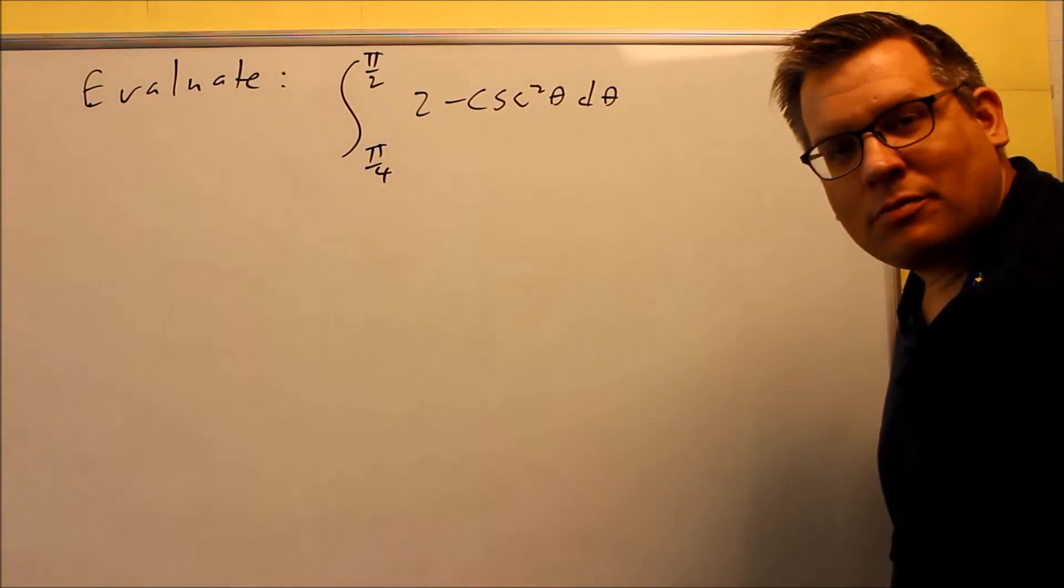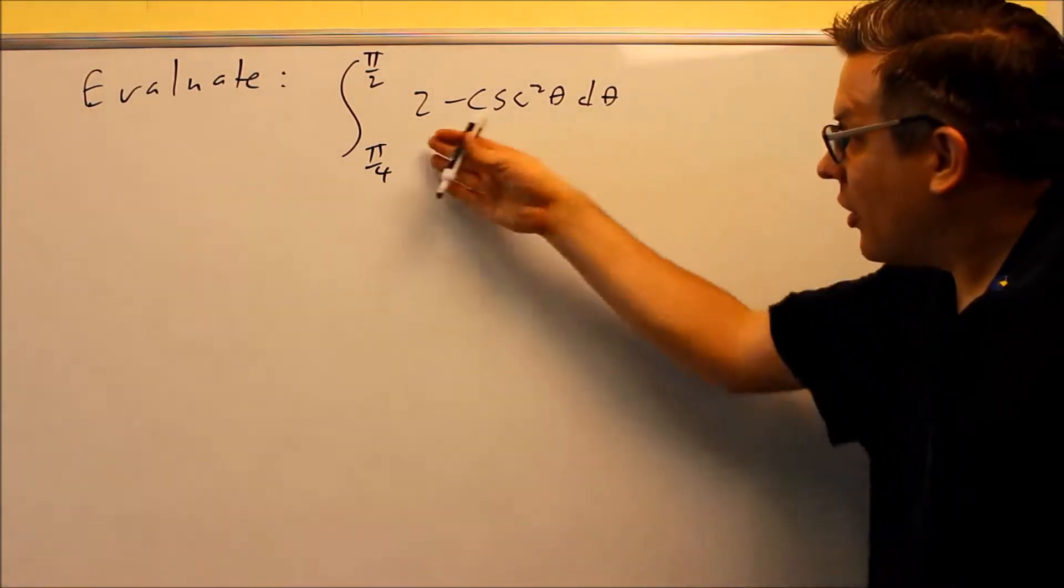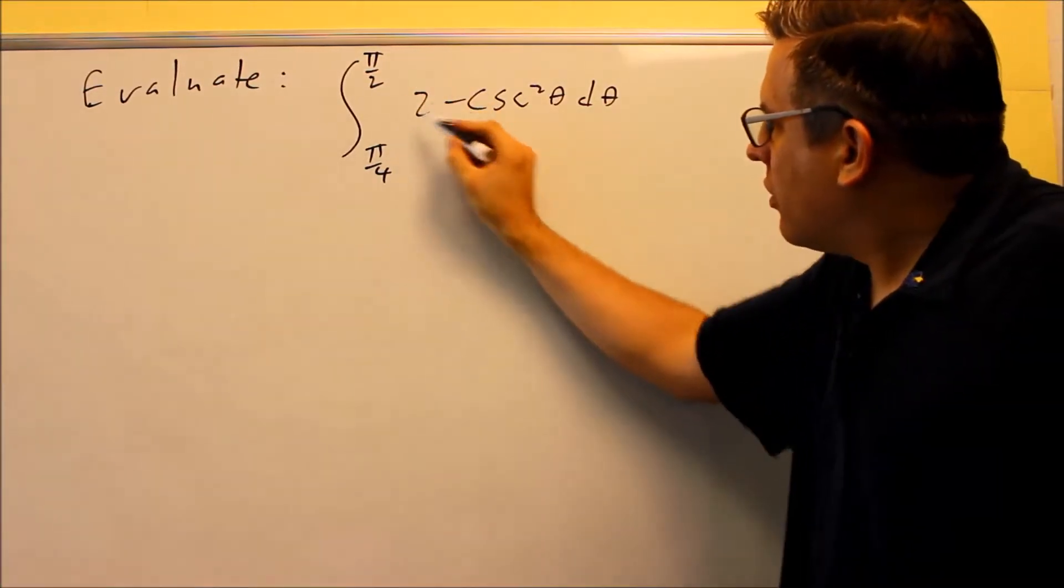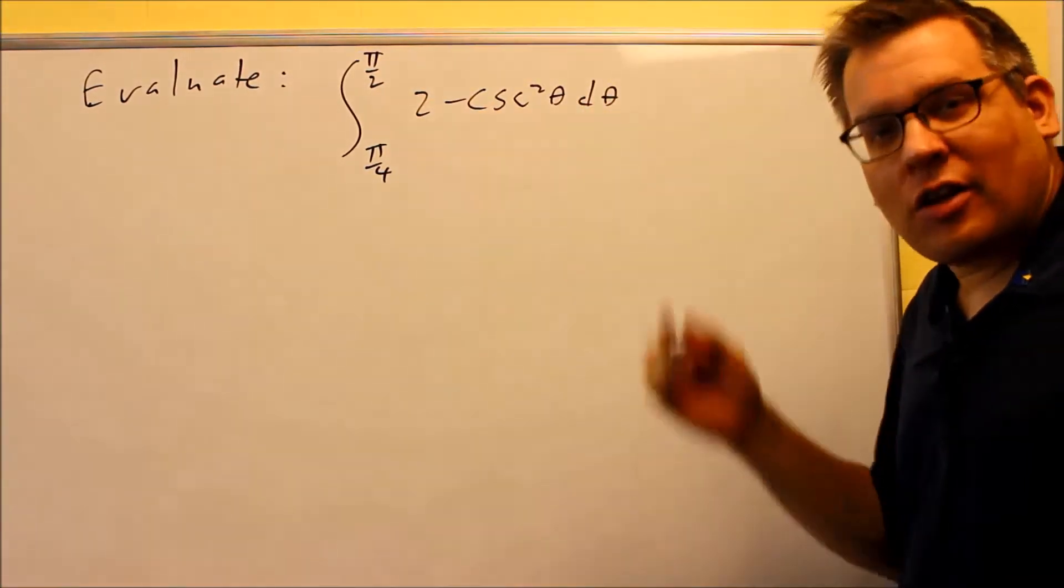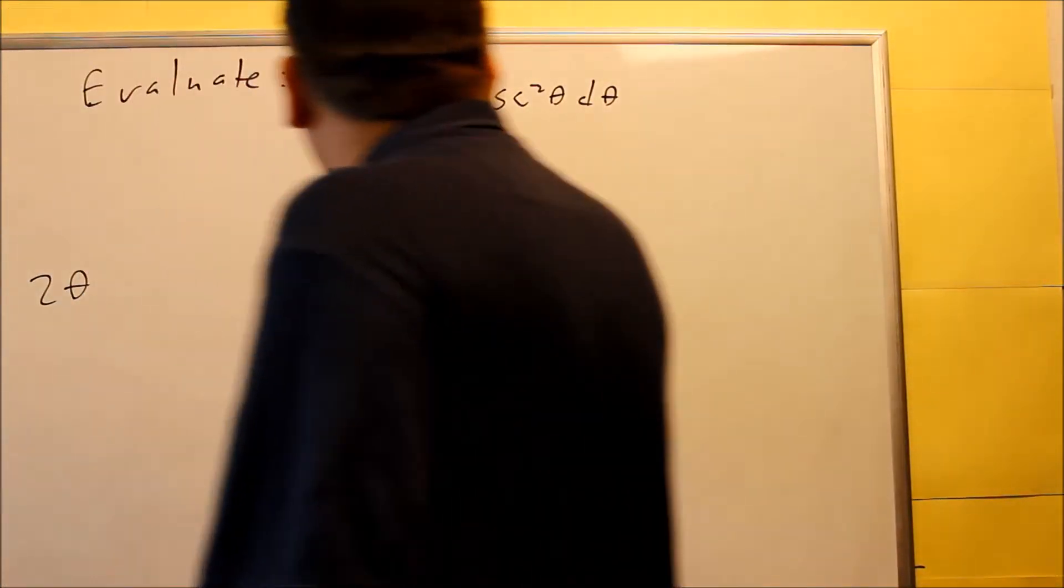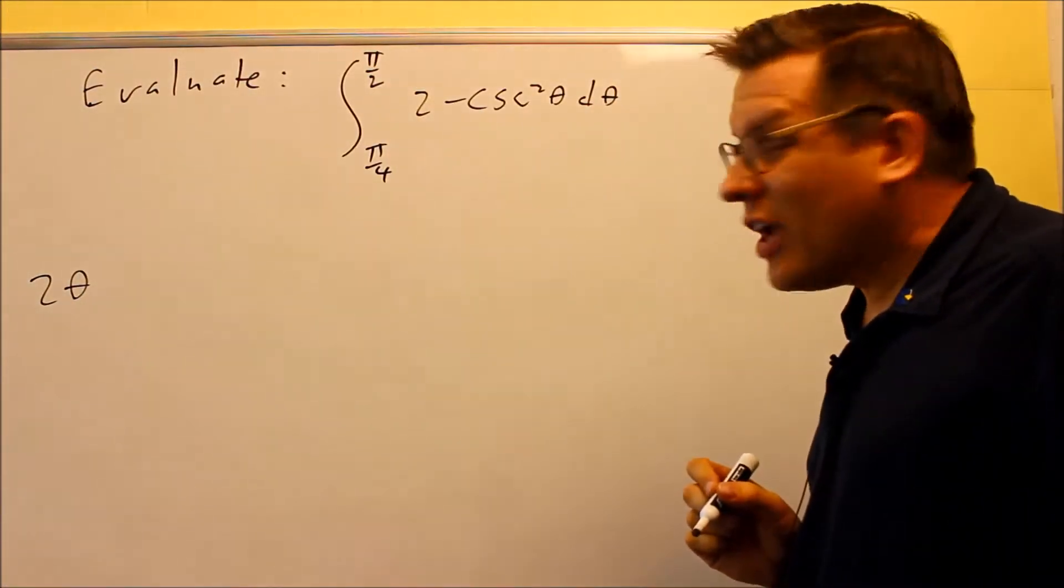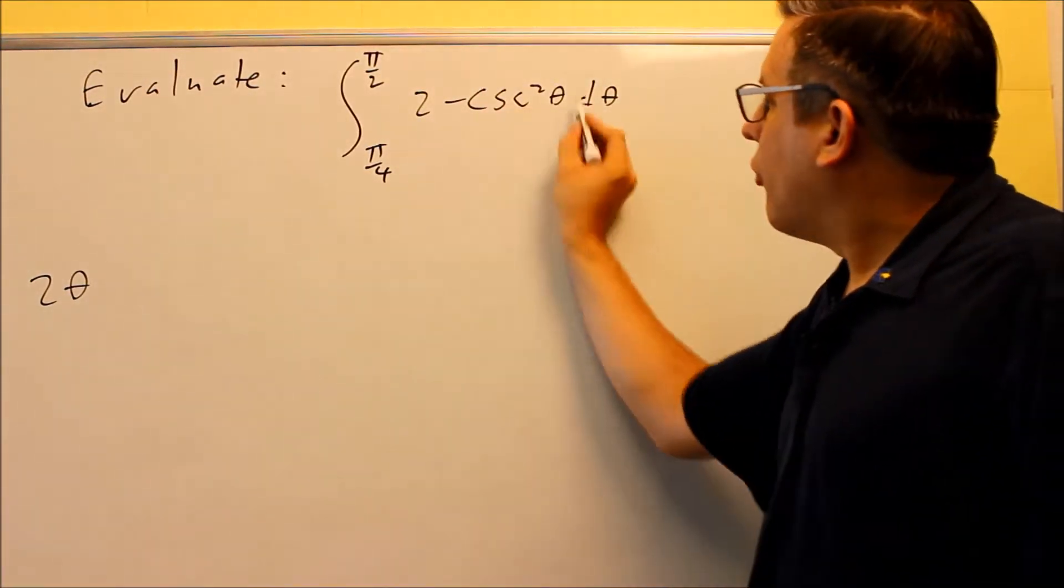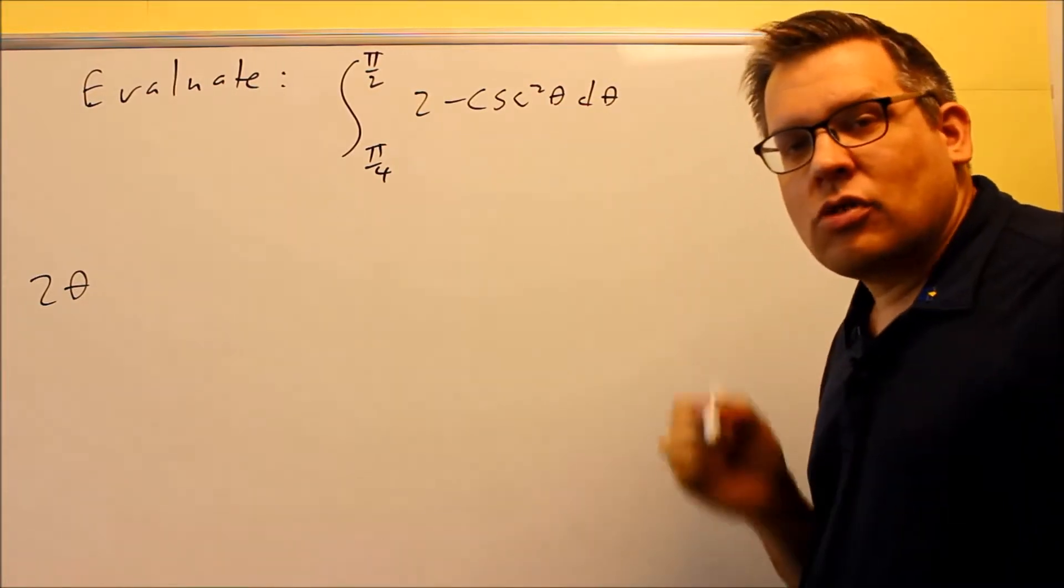Okay, for this next trig problem, you can't put an identity in here to make that any simpler. So we're just going to integrate that one as is. So we're going to integrate this. The dθ means that θ is the variable that we're going to get out of this. So when we integrate the 2, you're going to get 2θ. And then negative cosecant squared, if you take the antiderivative of all of that, that's going to turn into cotangent.